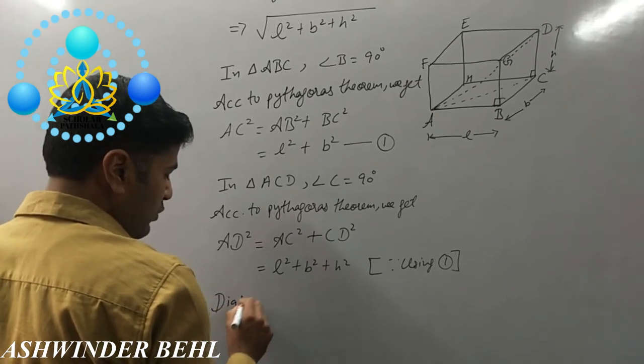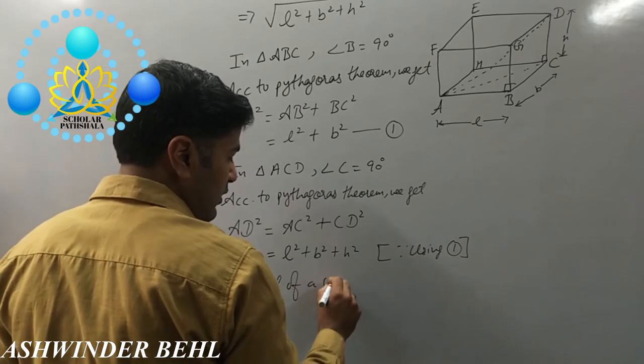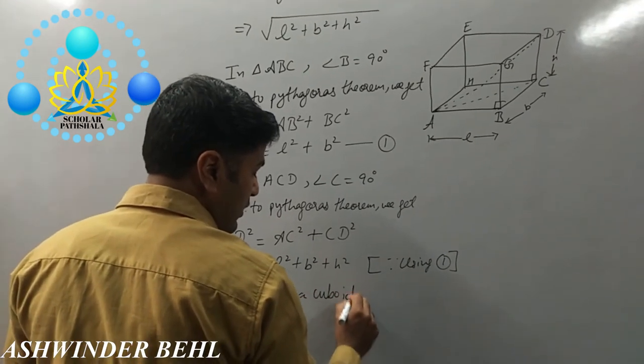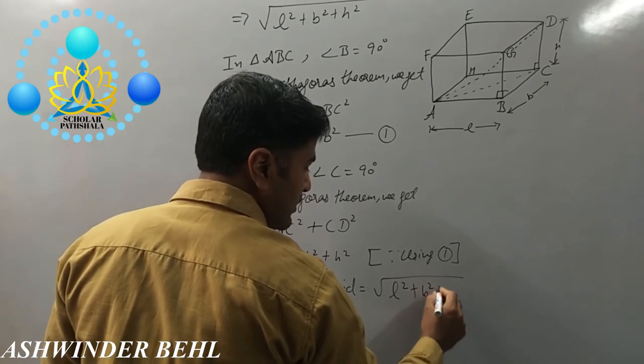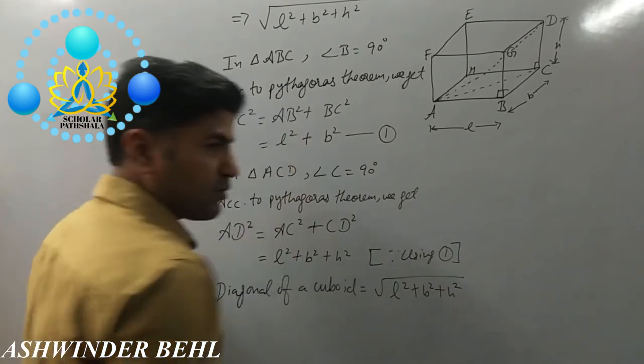Therefore, the diagonal of a cuboid is √(L² + B² + H²).